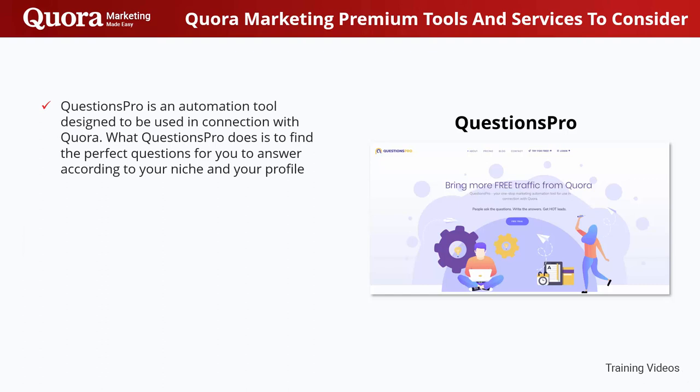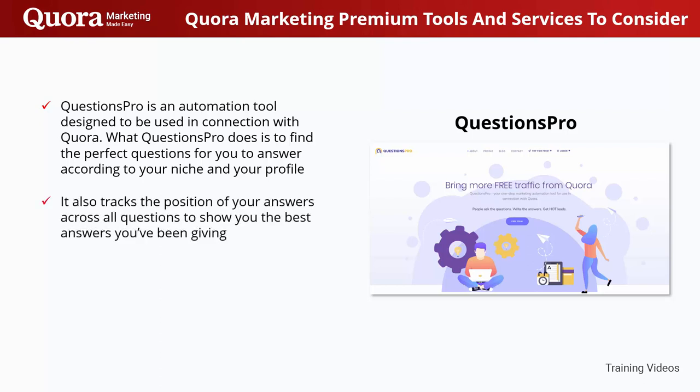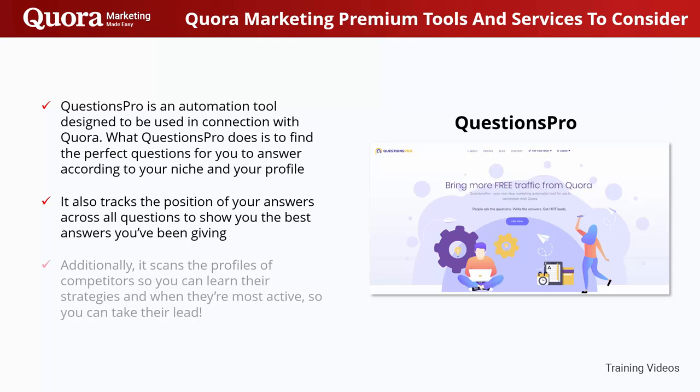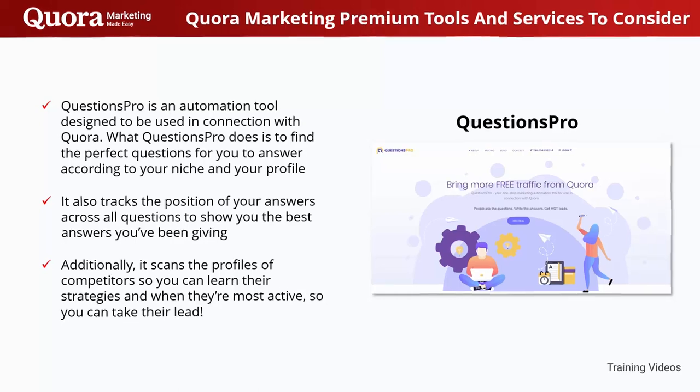Questions Pro is an automation tool designed to be used in connection with Quora. What Questions Pro does is find the perfect questions for you to answer according to your niche and your profile. It also tracks the position of your answers across all questions to show you the best answers you've been giving. Additionally, it scans the profiles of competitors so you can learn their strategies and when they're most active, so you can take their lead.